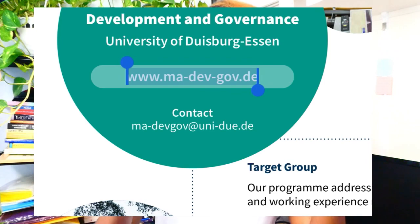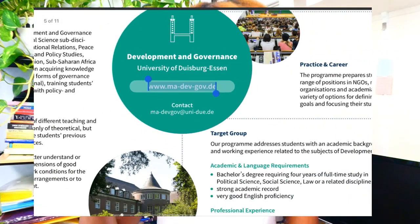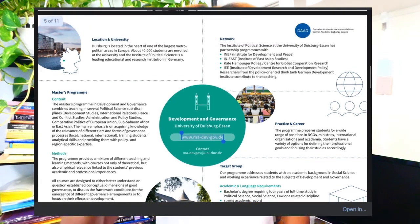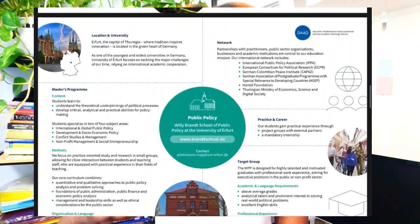That link takes you straight to the university's website, where you can see the details about the program. Under this particular scholarship, you have to apply to the university first. When you apply, you indicate that you are interested in the DAAD scholarship program. They have more information on each program's website specifically for DAAD applicants.